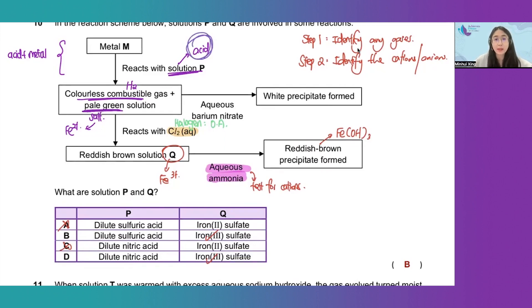All acids will contain H+ ion. How do we identify the different acids? It will be based on the anion.